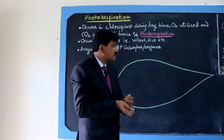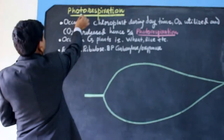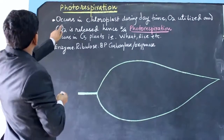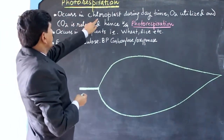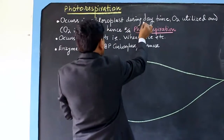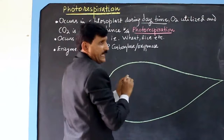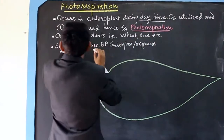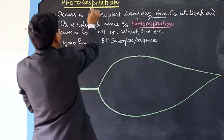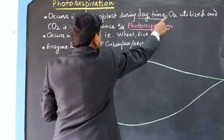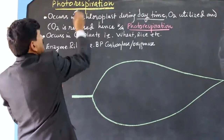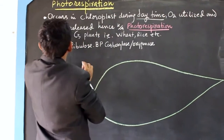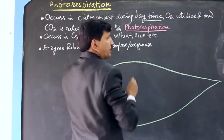Now, information on the box: we will study photorespiration. Photorespiration occurs in chloroplasts during the daytime. In this process, oxygen is utilized and carbon dioxide is released — similar to respiration — hence the term photorespiration.